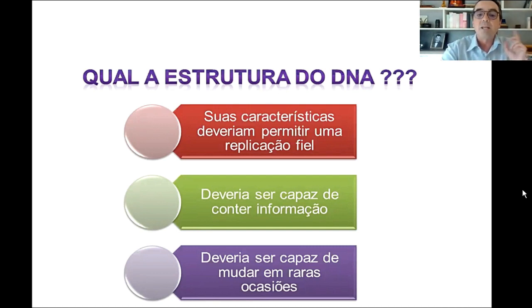Mas se sabia que o DNA precisaria ter algumas características. Ele precisaria permitir uma replicação fiel, ele precisaria ser replicado de forma exata, quase perfeita, que é o que garantiria hereditariedade. Essa molécula precisaria ser capaz de conter informação e ela teria que, de vez em quando, permitir pequenas mudanças, que seriam mutações em raras ocasiões. Agora, como que seria a estrutura da molécula que permitiria essas três propriedades?